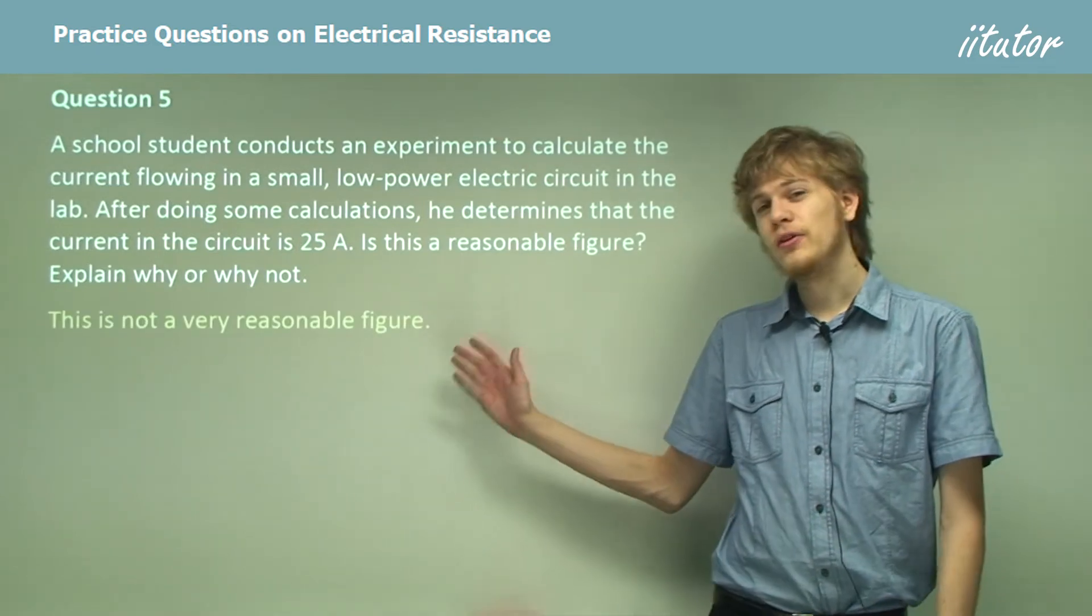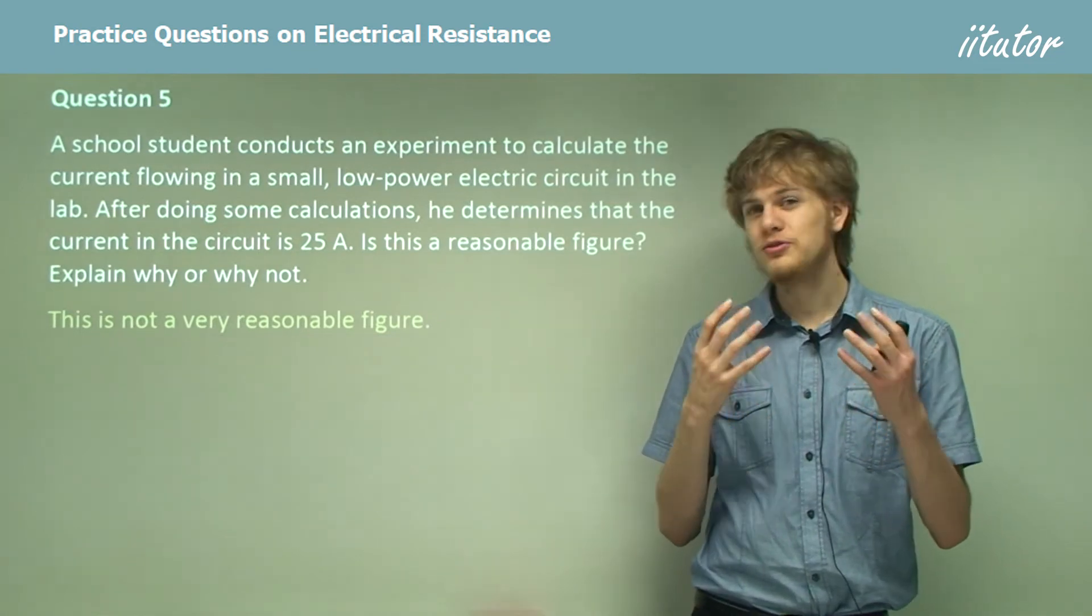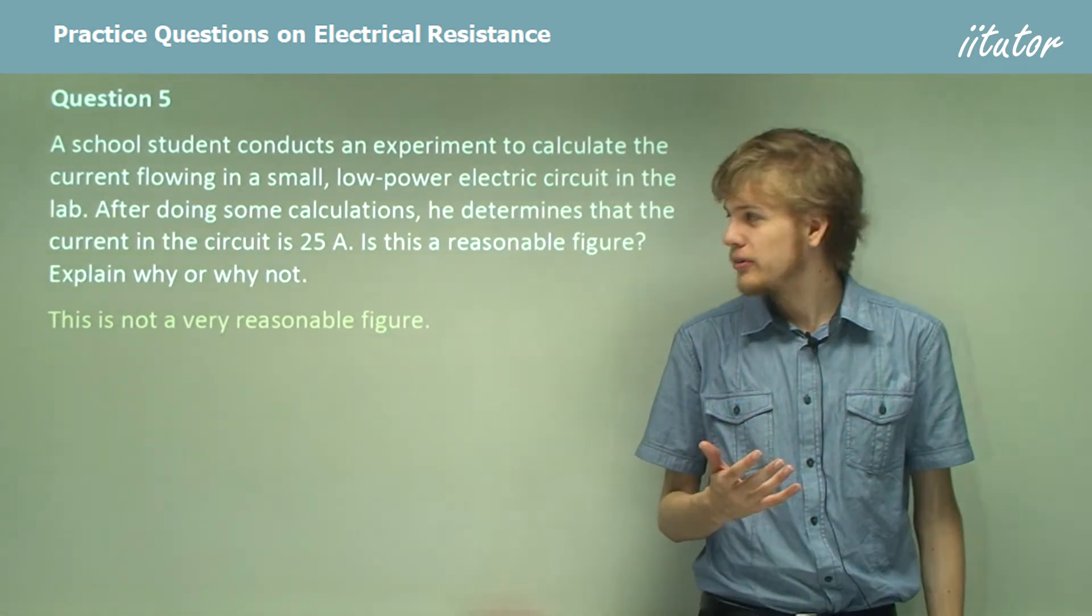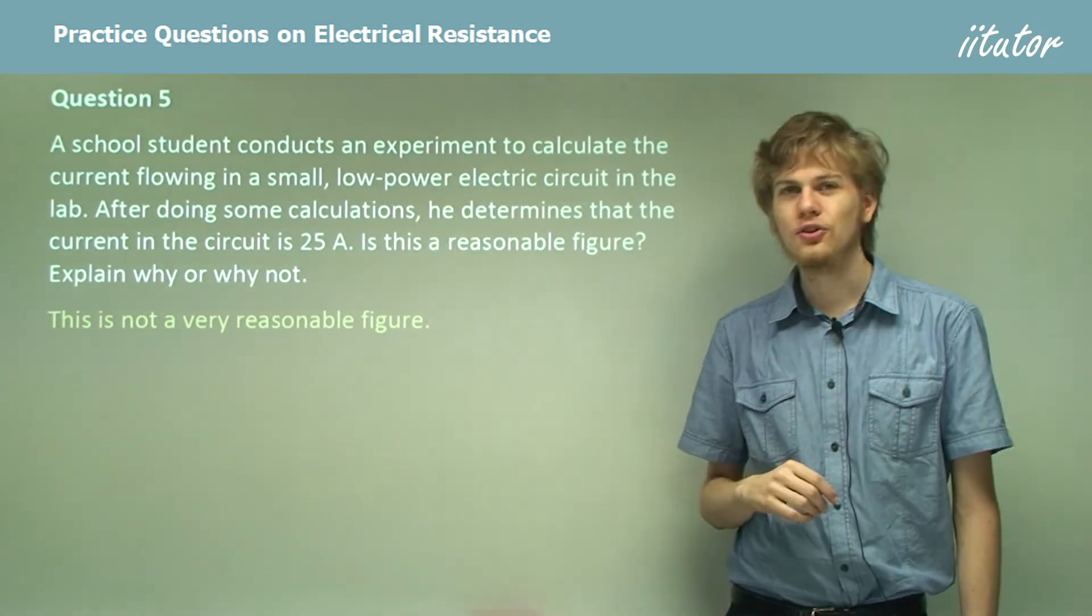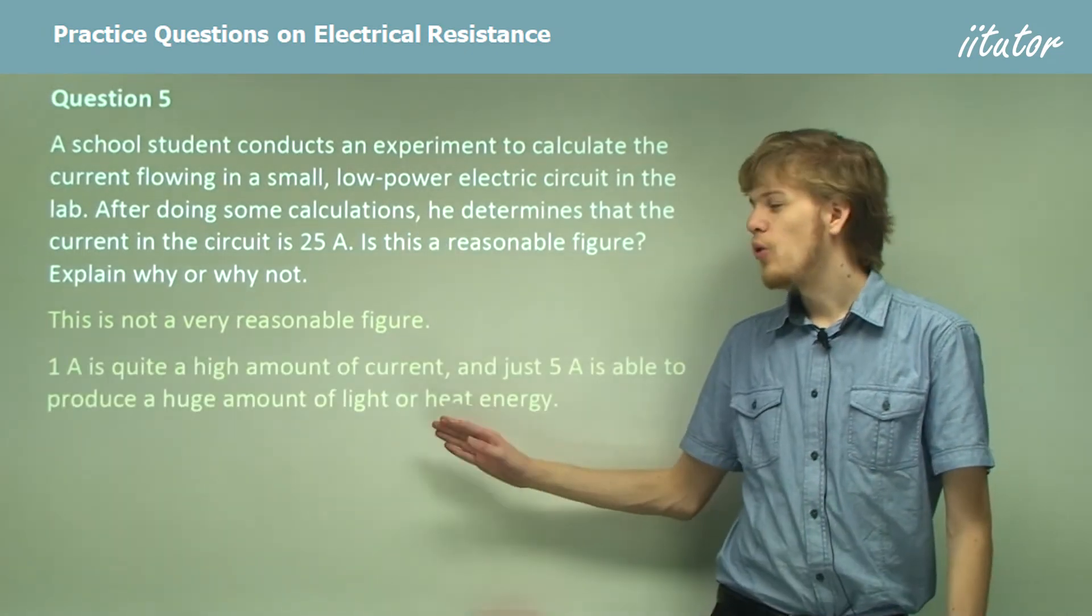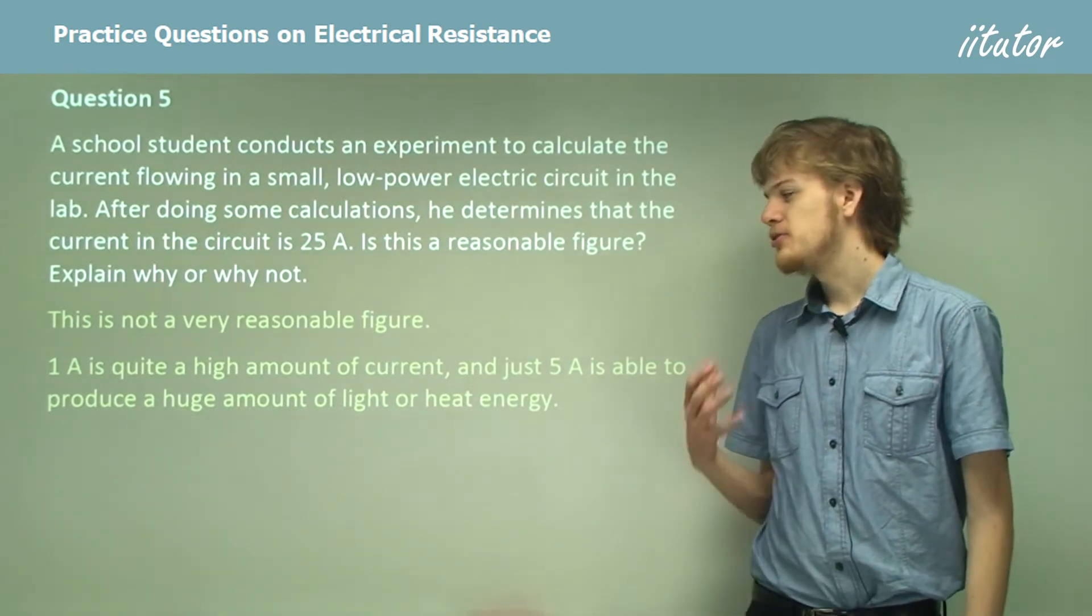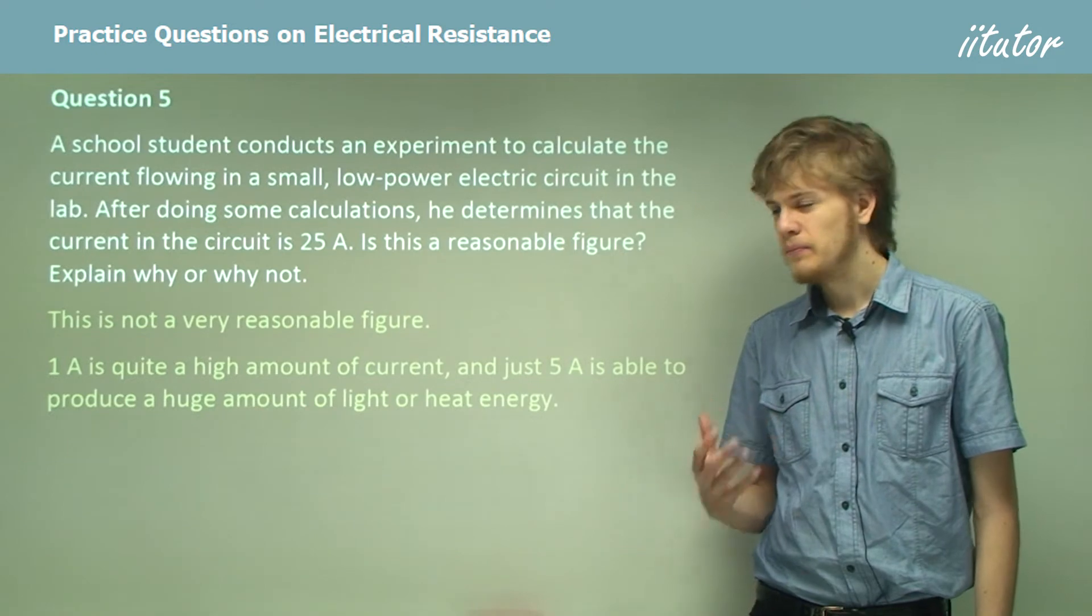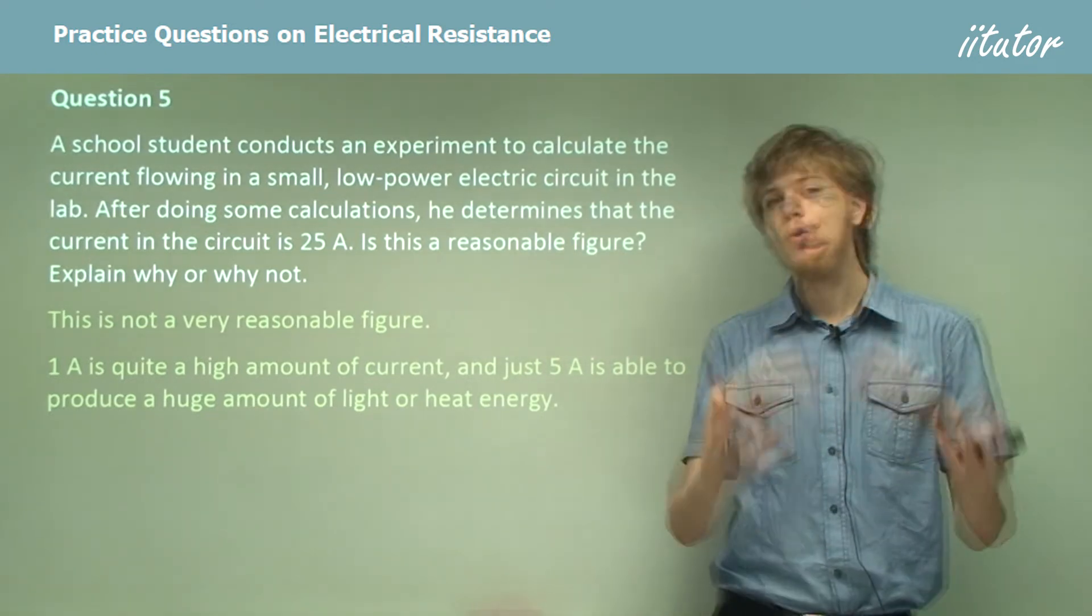This is not a very reasonable figure. Even if we had 10 amps, we'd be getting a very large amount of energy being output from the circuit. And so it certainly wouldn't be classified as a small low power electric circuit. Remember that one amp is already a high amount of current. And 5 amps is able to produce a large amount of light or heat energy. Remember that a car's headlight uses less than 5 amps to produce all that brightness.